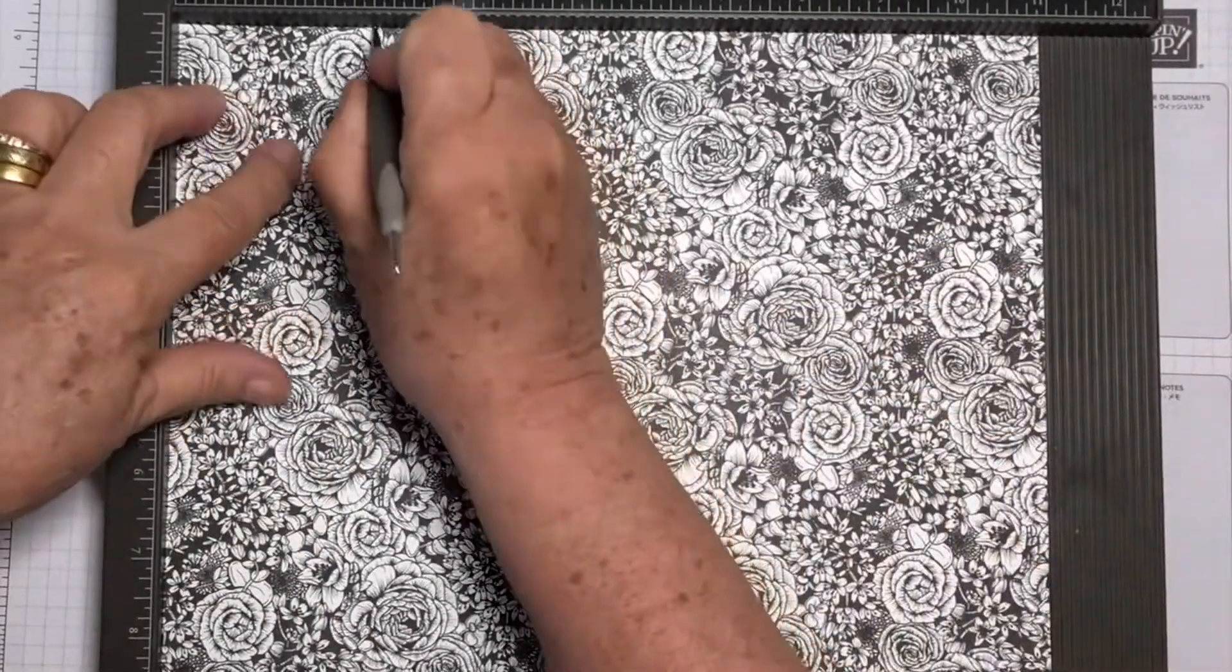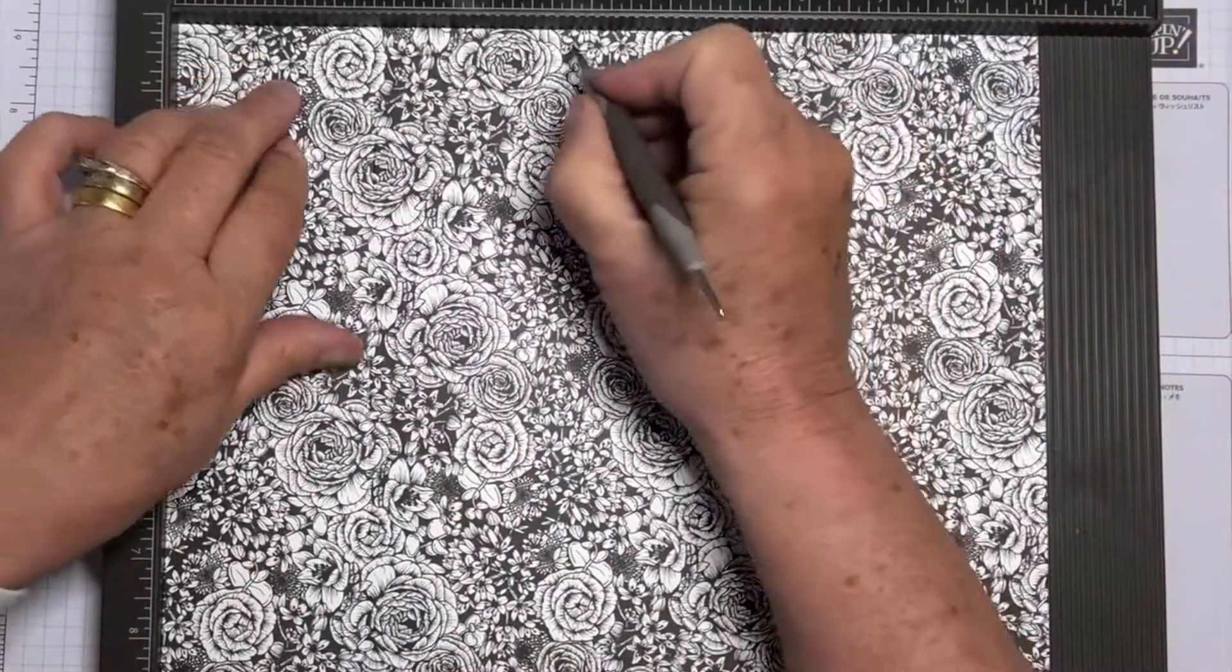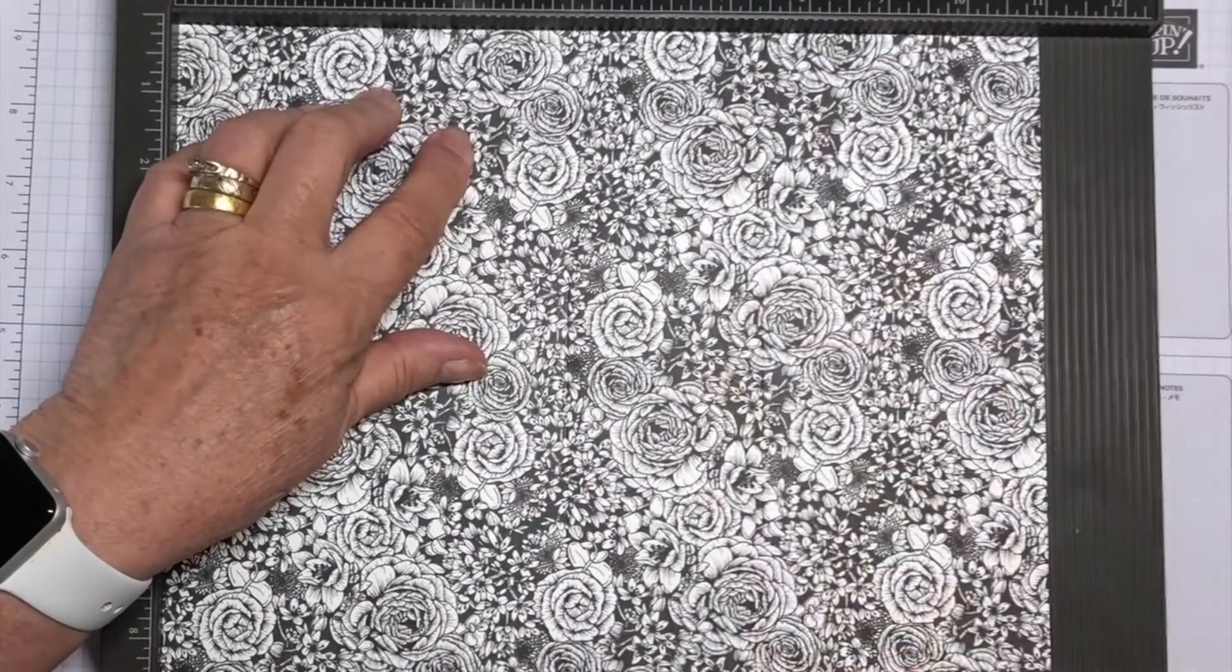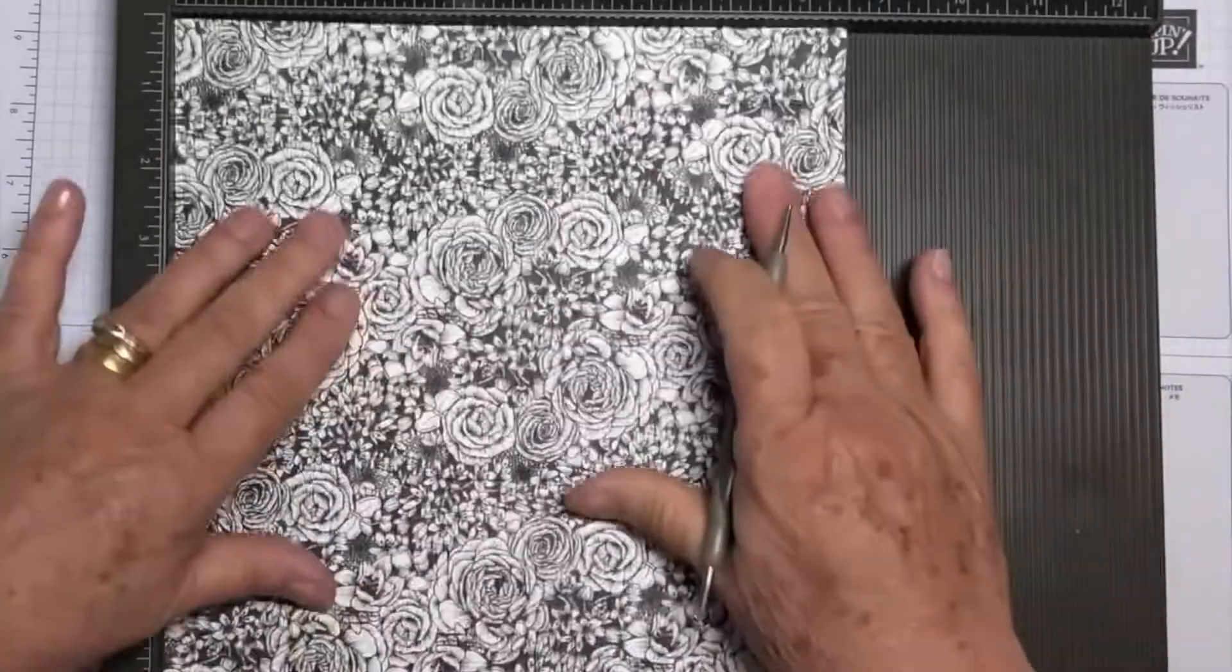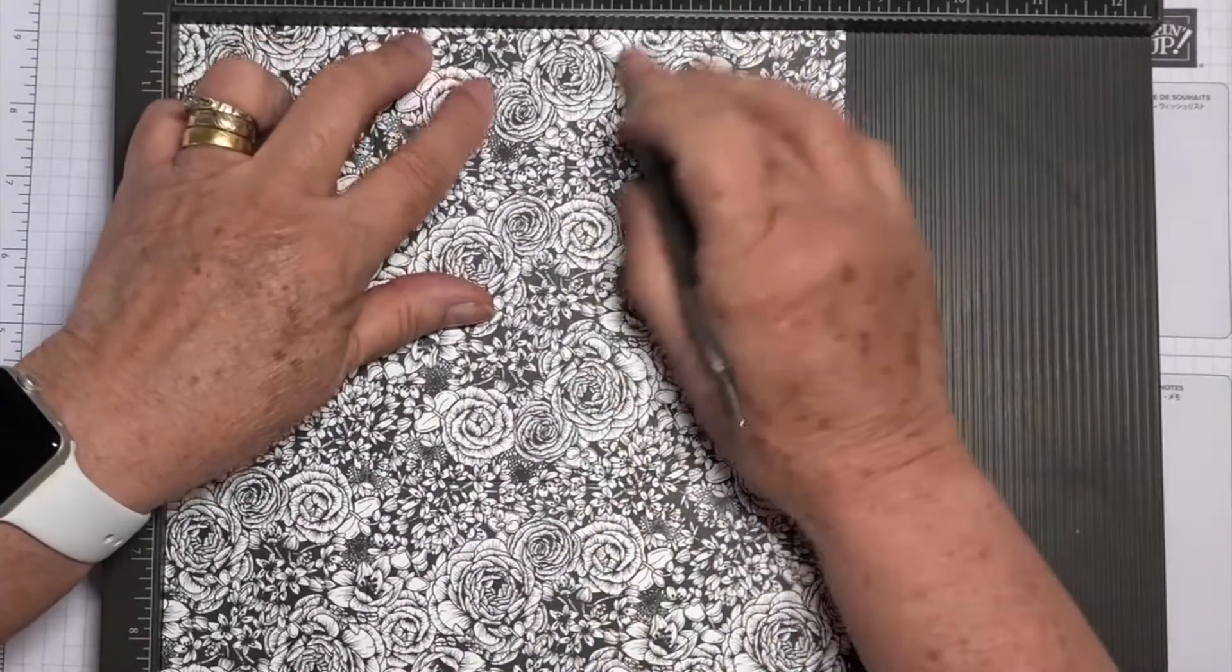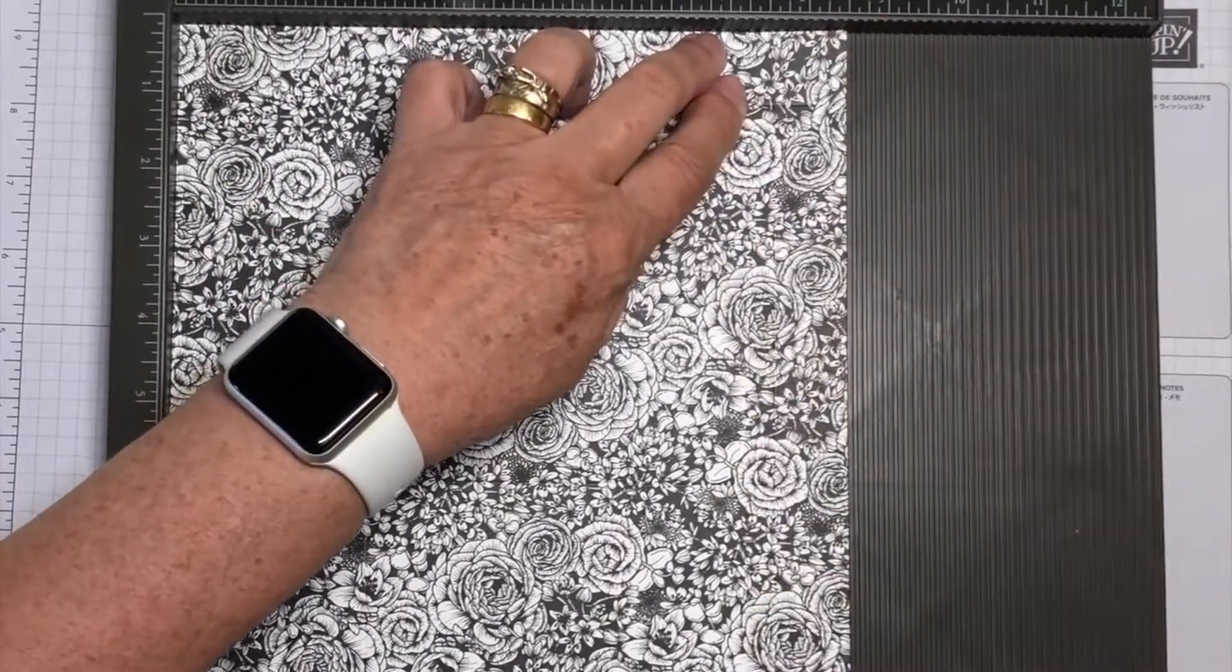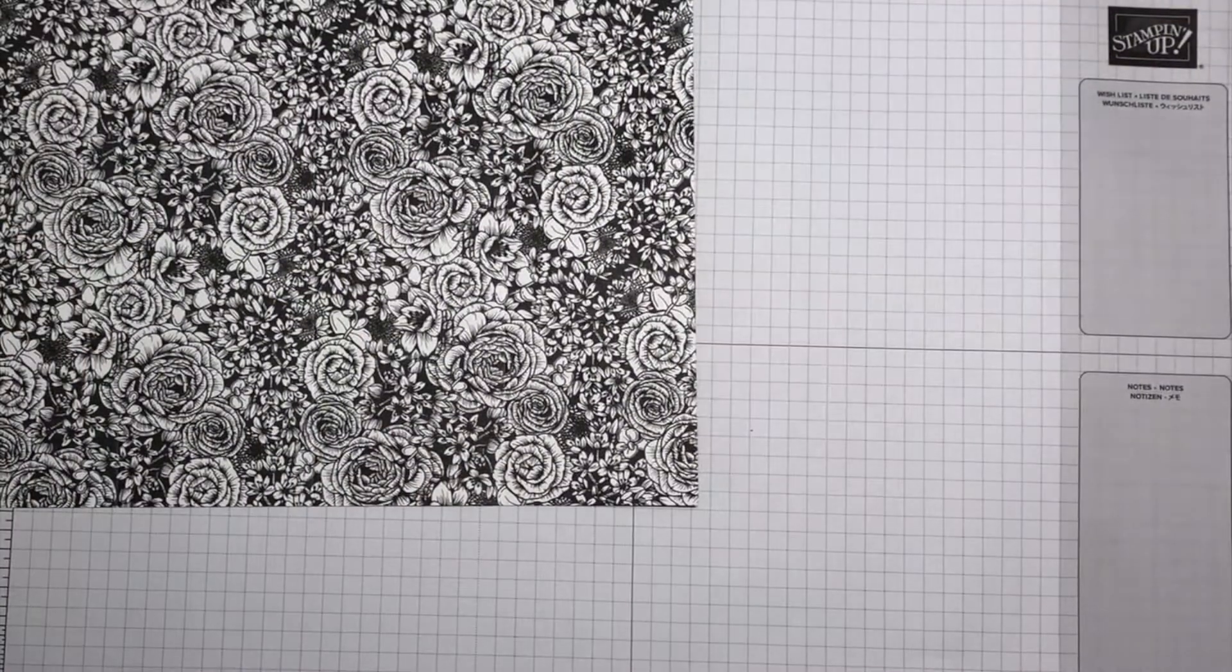We're going to score at two and a half, five, seven and a half, and ten. And on the short side it's two and a half, six, and seven and five eighths. That's all the scoring there is.